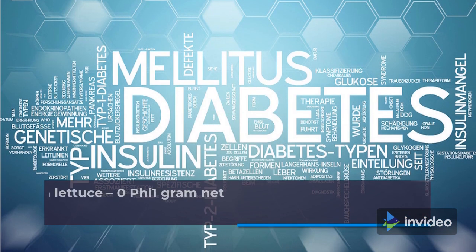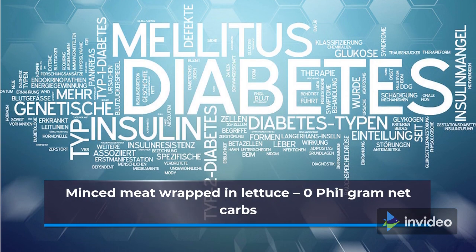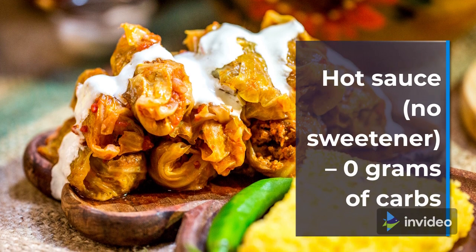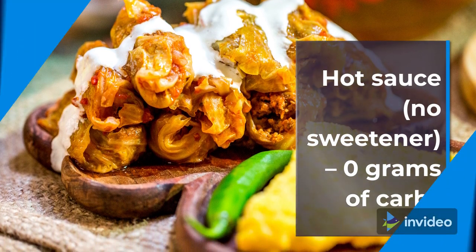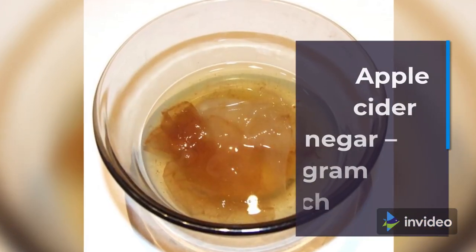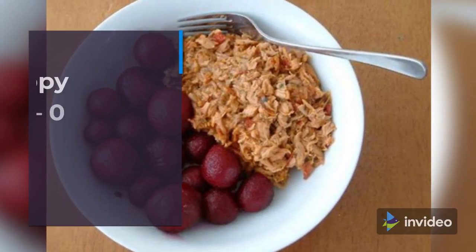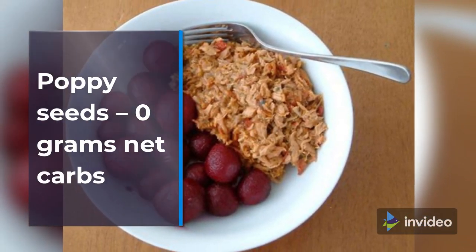Minced meat wrapped in lettuce — 0.5 to 1 gram net carbs. Spices and herbs — 0 grams net carbs. Hot sauce with no sweetener — 0 grams of carbs. Apple cider vinegar — 0 to 1 gram of carbs. Unsweetened mustard — 0.5 to 1 gram net carbs. Poppy seeds — 0 grams net carbs.